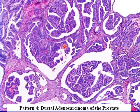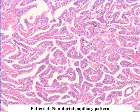Ductal adenocarcinoma, characterized by cribriform and papillary morphology showing stratified columnar epithelium, is classically considered an example of Gleason pattern four. If it is associated with necrosis, you would grade that as Gleason pattern five. A papillary pattern can also be seen in a non-ductal form, where the classic columnar stratified epithelium characteristic of ductal differentiation is not present.